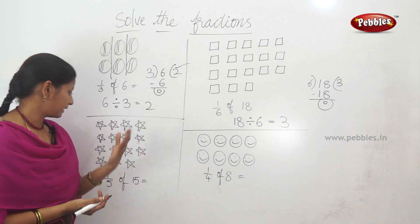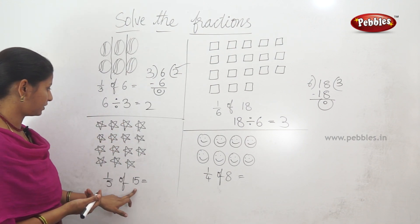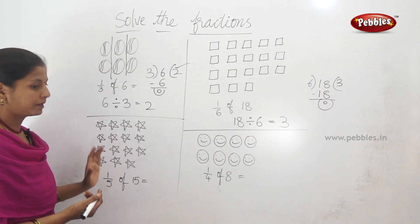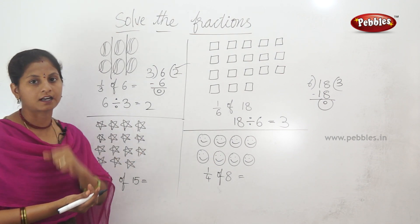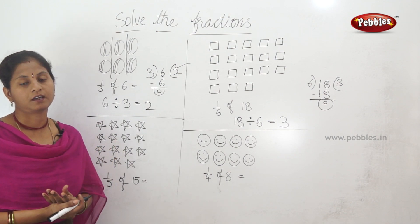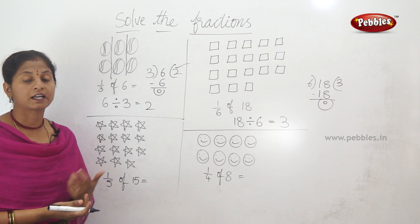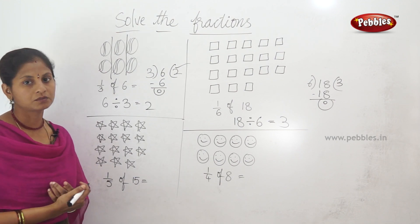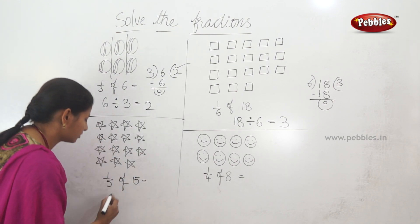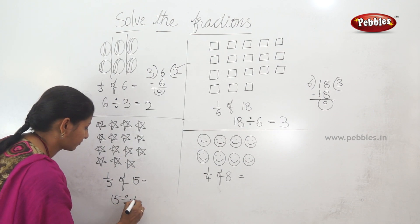Here are some examples. Here are stars. How many stars? 15. In these 15 stars, 1 by 5. We need to find 1 by 5 of 15. So, convert: 15 divided by 5.